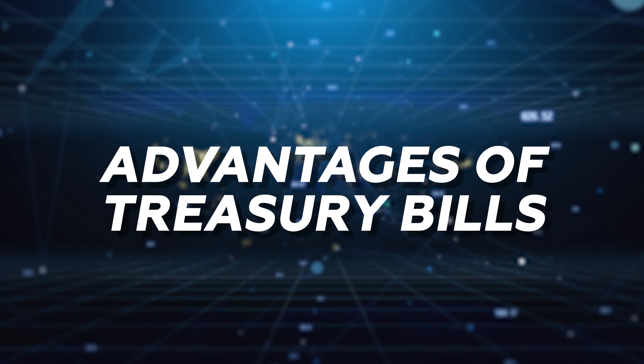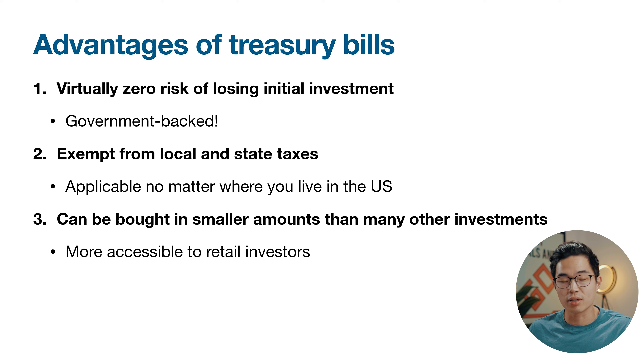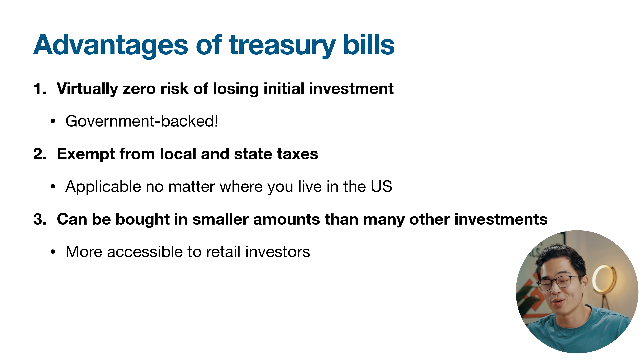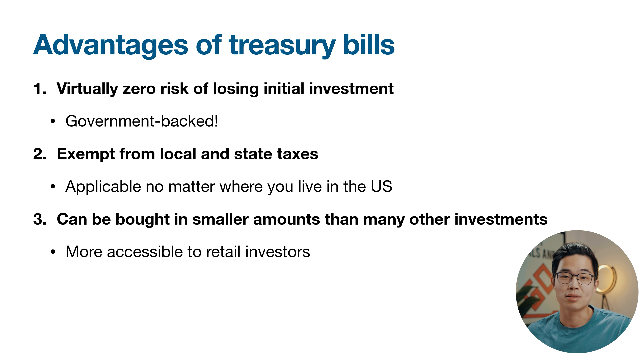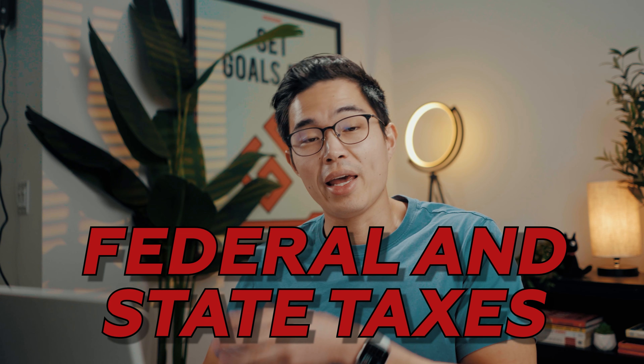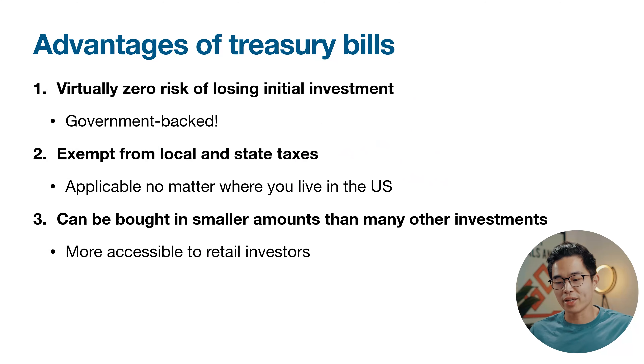What are the advantages of T-bills? First, there's virtually zero risk of losing your initial investment — these are government backed. They're also exempt from local and state taxes, which is a really big one. When you buy normal investments like stocks and crypto, you're basically going to be paying federal and state taxes. So if you're a high income earner in a state like California, that's up to 13.3%. They can also be bought in smaller amounts than many other investments, making them very accessible to retail investors.